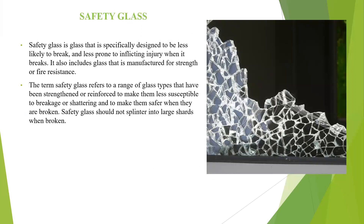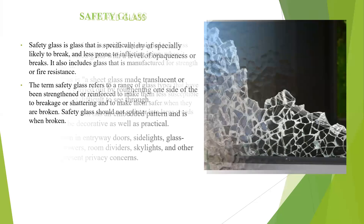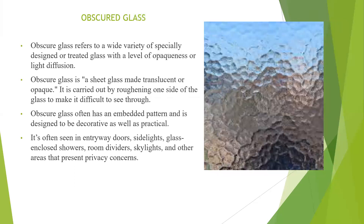Safety glass is specifically designed to be less likely to break and has reduced injury potential. It includes manufacturing strength for fire resistance. Safety glass refers to a range of glass types reinforced with materials to enhance durability. Obscured glass is a variety offering different levels of light transmission. Obscured glass is sheet glass made with a textured surface that carries a different light structure.